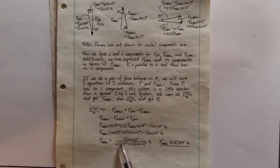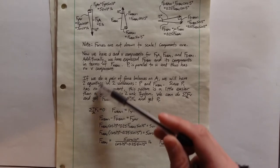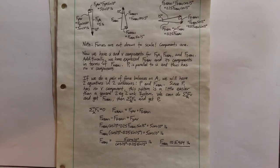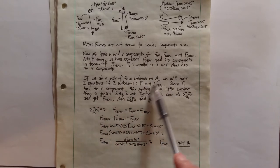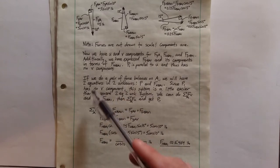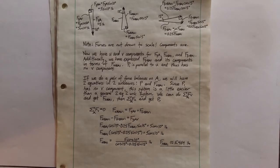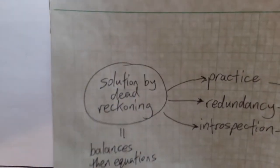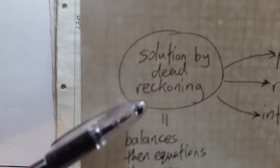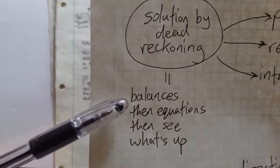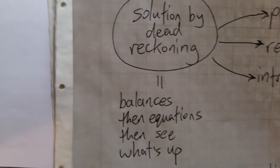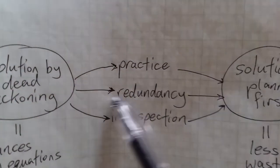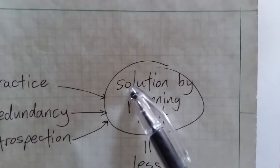A note on proficiency levels: if your understanding of this material is shaky, you'd probably prefer I show the algebra first and then explain the strategy. If it's strong, you prefer general plan then specific execution. The direction of improvement is: practice, redundancy, and introspection. Solution by dead reckoning means just starting — drawing free body diagrams, writing balance equations, then seeing what's up. Solution by planning first means knowing ahead of time which steps lead to the goal and which are dead ends. Practice, multiple ways of understanding, and reviewing your work lead you from one level to the other.